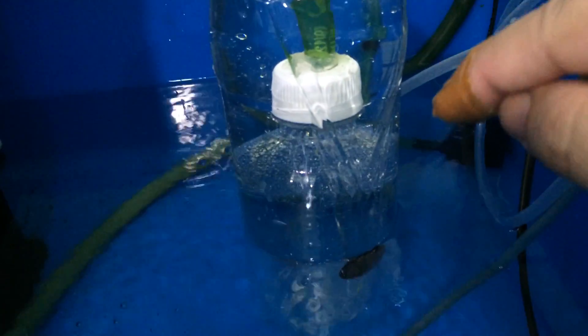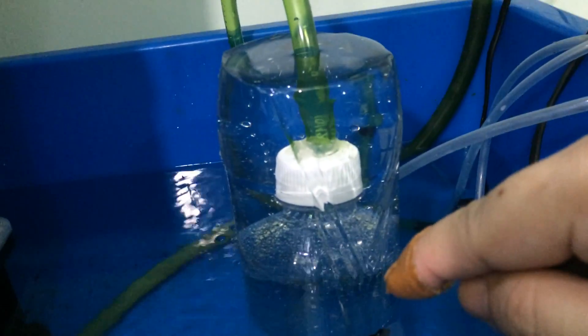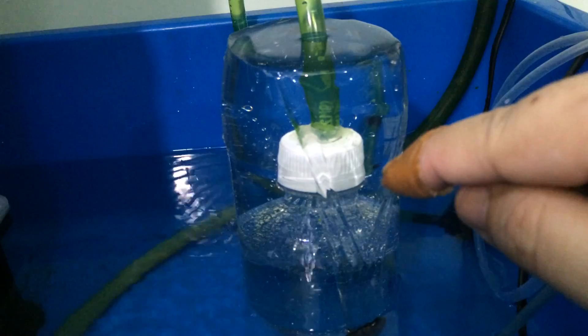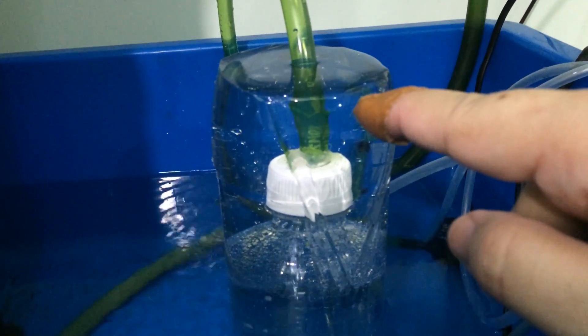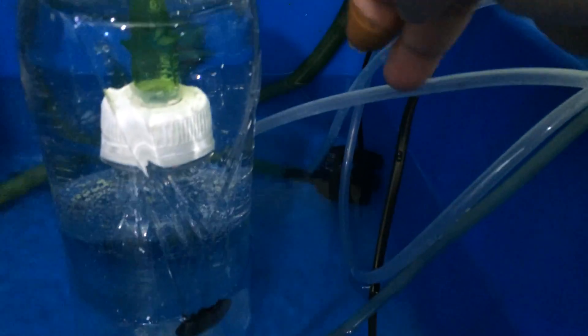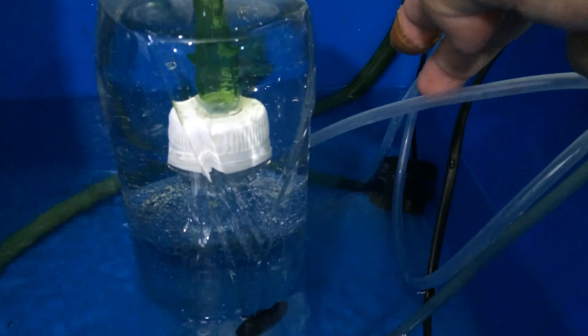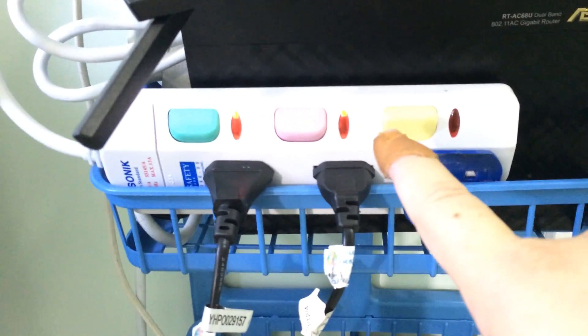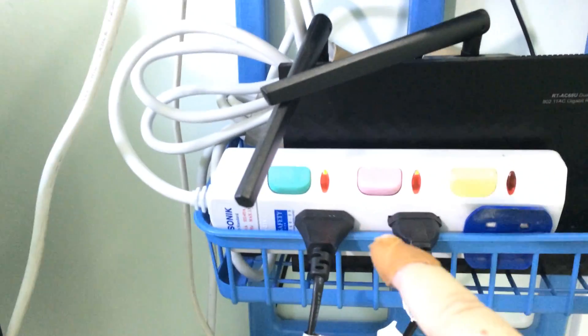The good thing is this small submersible pump actually uses a timer to coincide with the time of the lights, so the lights will turn on together with the pump that will diffuse the CO2 at exactly the same time.